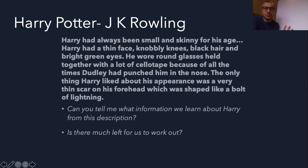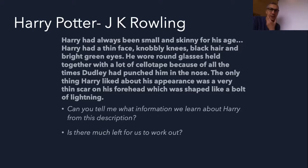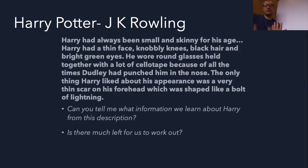That's an excellent character description because straight away it tells us exactly what he looks like. We know he's small and skinny — there's a bit of alliteration there. He's got a thin face, knobbly knees, black hair, and bright green eyes. We can straight away think maybe Harry Potter's not particularly good at PE. We know what his face and body look like, but it doesn't tell you much about his behavior — we learn that a little bit later on.